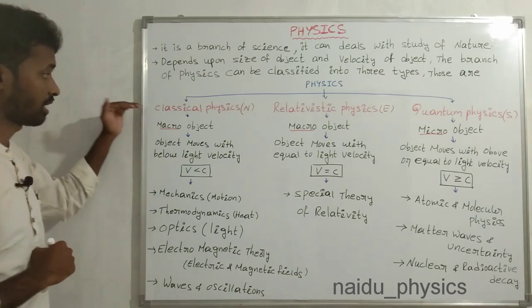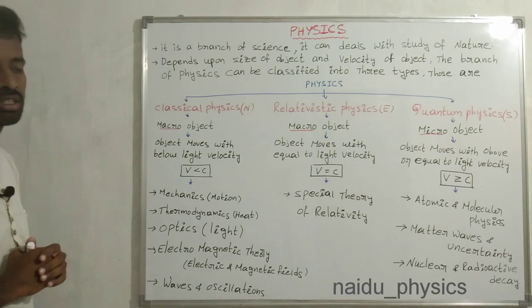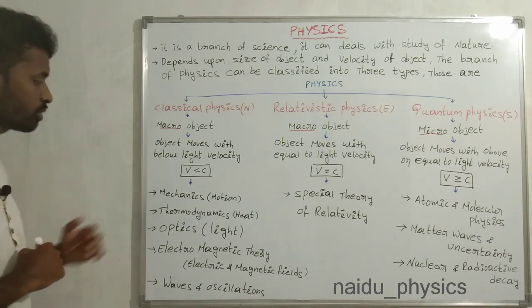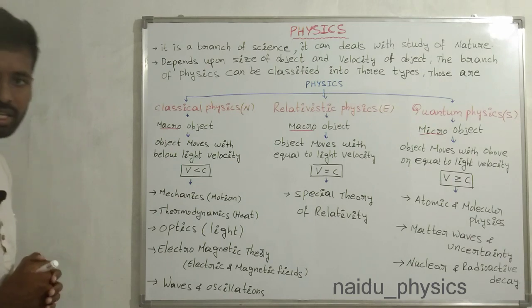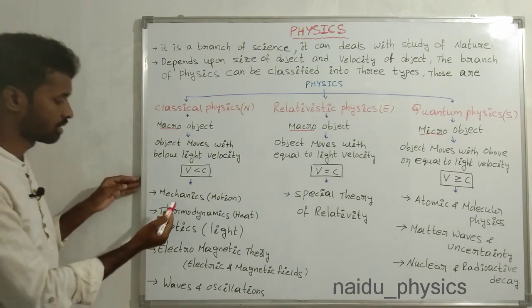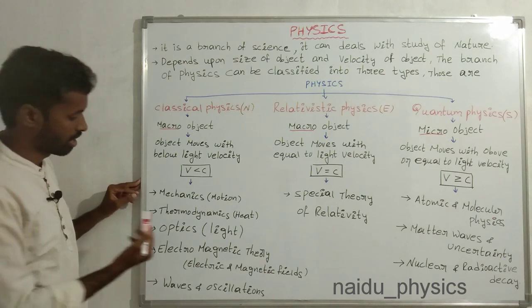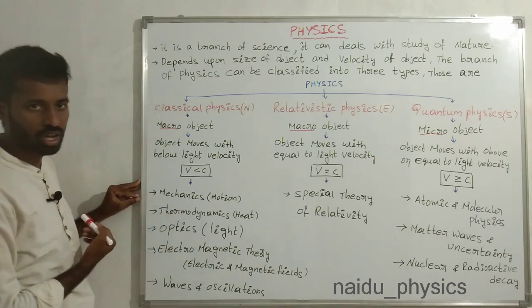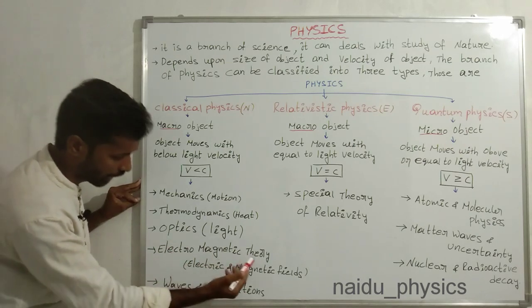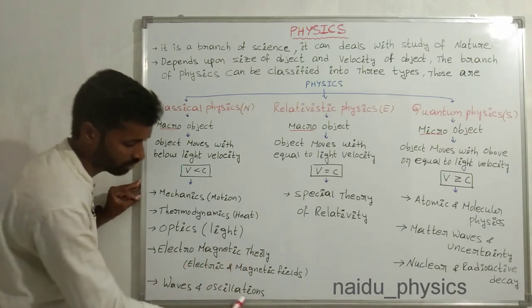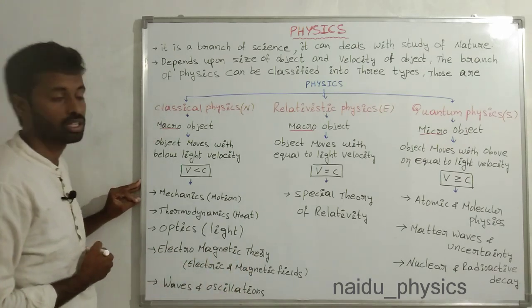In classical physics, we have to study some more different topics in our B.Sc. One is mechanics, another one is thermodynamics, next one is optics, another one is electromagnetic theory, and finally waves and oscillations.